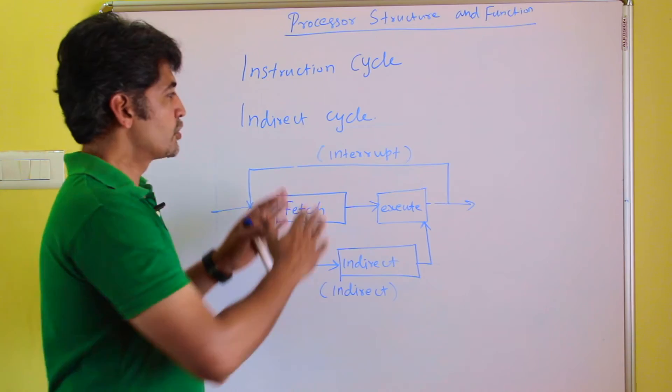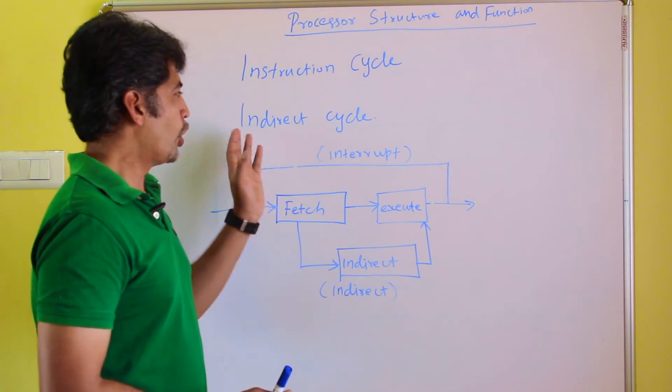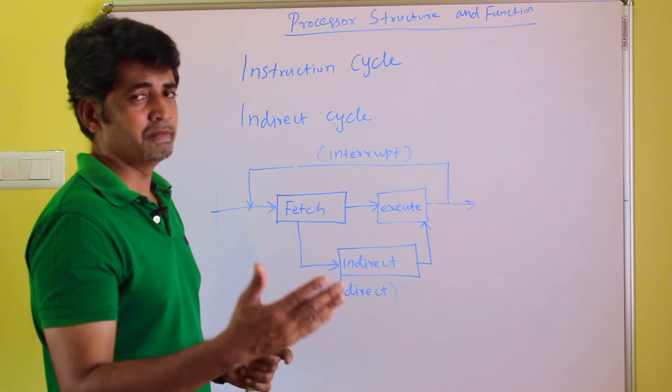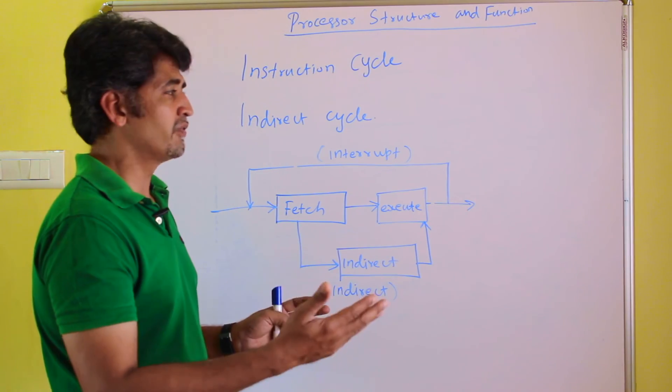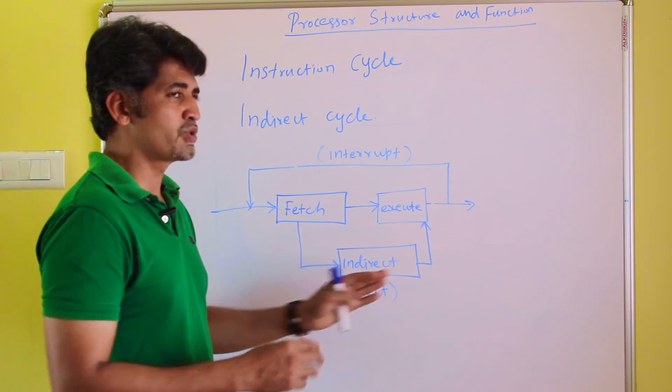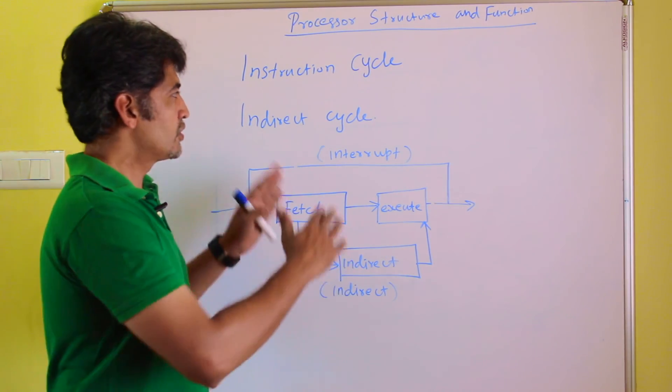The indirect cycle takes more time during the operand fetch because it refers to more memory locations. Because of that, the execution time will be expanded and the efficiency will go down.